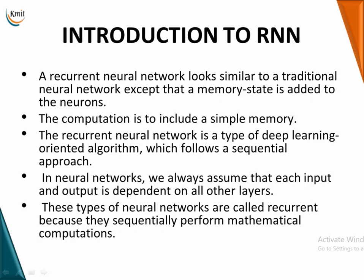RNN looks similar to the traditional neural network except that it has a feedback element — memory is added to the neurons so the computation includes a simple memory. The RNN network is a type of deep learning algorithm that follows a sequential approach because it is dependent on time. In a neural network we always assume each input and output is dependent on every other layer, and these networks are called recurrent because they sequentially perform mathematical computations inside the network.